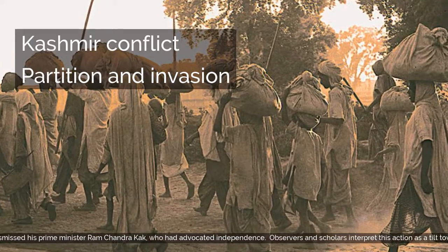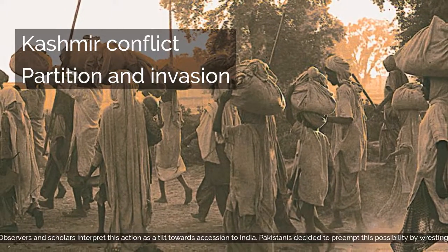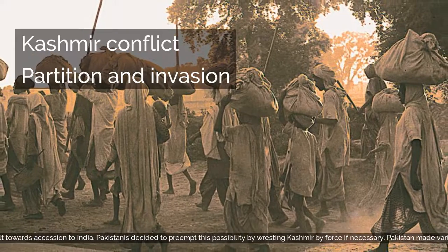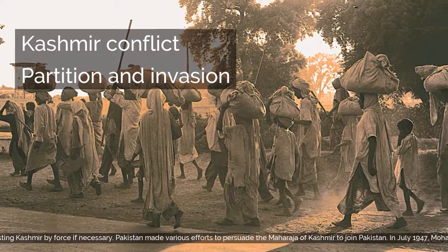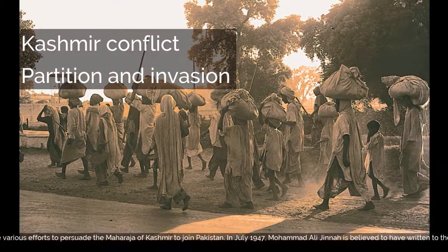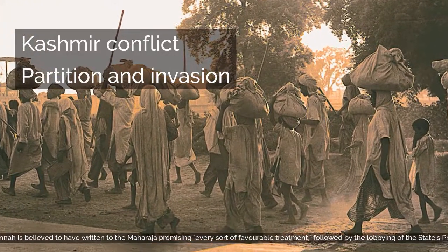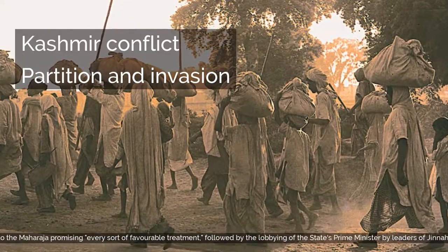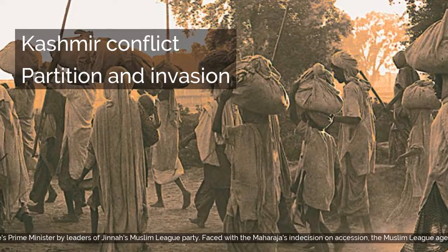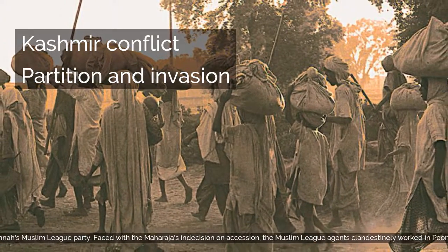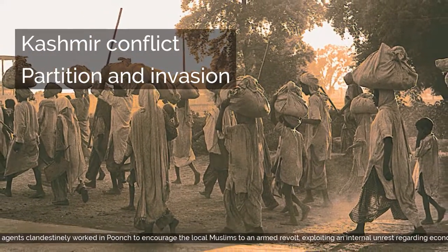Pakistanis decided to preempt this possibility by wresting Kashmir by force if necessary. Pakistan made various efforts to persuade the Maharaja of Kashmir to join Pakistan. In July 1947, Muhammad Ali Jinnah is believed to have written to the Maharaja promising every sort of favorable treatment, followed by the lobbying of the state's Prime Minister by leaders of Jinnah's Muslim League Party. Faced with the Maharaja's indecision on accession, Muslim League agents clandestinely worked in Punjab to encourage the local Muslims to armed revolt, exploiting internal unrest regarding economic grievances.